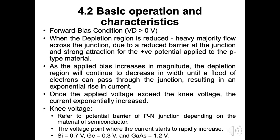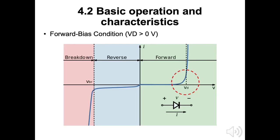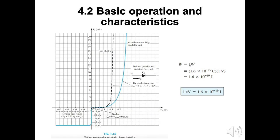The knee voltage is referred to as the potential barrier of the P-N junction, depending on the semiconductor material. At this voltage point, the current starts to rapidly increase exponentially. Silicon has a knee voltage of 0.7 V, germanium 0.3 V, and gallium arsenide 1.2 V. The dotted red line shows the knee voltage for any P-N combination. We can see that at this point the current increases exponentially after reaching VK or VD. This figure shows the voltage knee for a silicon semiconductor diode characteristic.